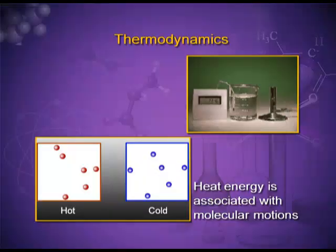In daily life, we use a dry cell in a remote or a torch. The chemical energy stored in the dry cell is converted into electrical energy. Thermodynamics is the branch of science which deals with the quantitative relationship between these different forms of energy and the conversion of heat into work and work into heat.